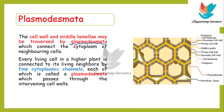Each living cell in a higher plant is connected to its living neighboring cells by these cytoplasmic strands which are called plasmodesmata. Plasmodesmata are found only in plant cells and also in algal cells. They are found in algae as well, but these are not found in animal cells.